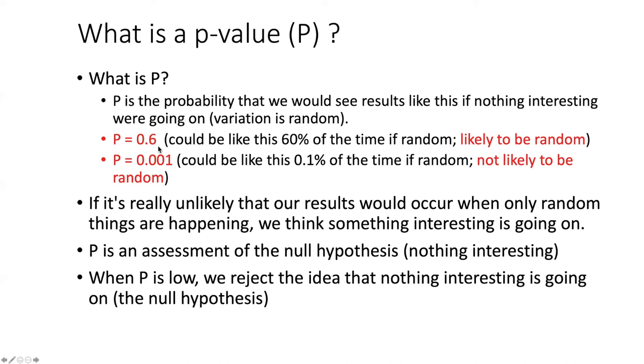So if we have a high value of p, something like 0.6, that means that things could happen like this 60% of the time if the differences between men and women were only random. So a high p-value like this means that it's likely that this is just random variation we're seeing.